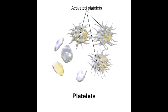What is thrombocytopenia? Thrombocytopenia is the deficiency of platelets in the blood. What would the consequence be in case of thrombocytopenia or platelet dysfunction? This would result in petechiae. What are petechiae?